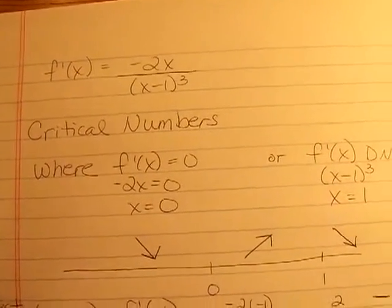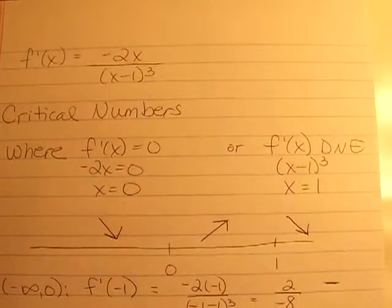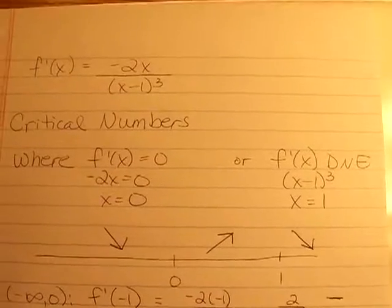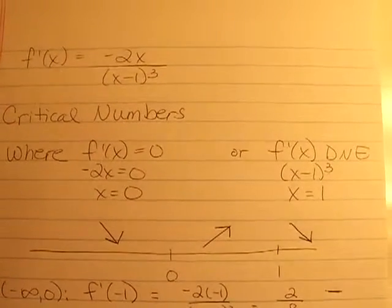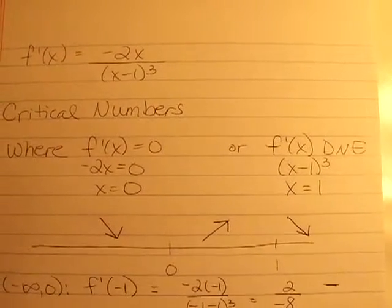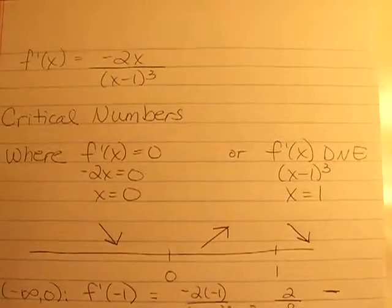Now we take that term, and to find our critical numbers, we have to find out where f prime of x is equal to zero, or where it does not exist. It's going to equal zero where the numerator equals zero. So in this case, when x equals zero, and it will not exist when the denominator equals zero, and that would be when x equals 1.